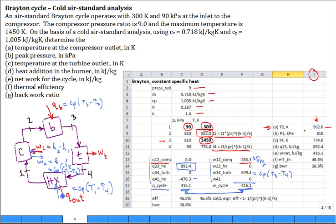And then we compute the thermal efficiency, and you can even compare it with the analytic expression that's derived in the textbook. There's the analytic expression for the Brayton cycle thermal efficiency, assuming a cold air standard analysis. It's a function only of the pressure ratio and the K. And these two values are consistent, 46.6%, and the back work ratio is 38.8%.